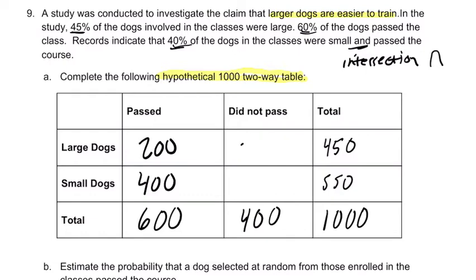Now we fill in the missing gaps. 200 plus 250 is 450 — that checks out. And then 400 plus something is 550, that's 150. So we fill that in and now we have our table filled out.